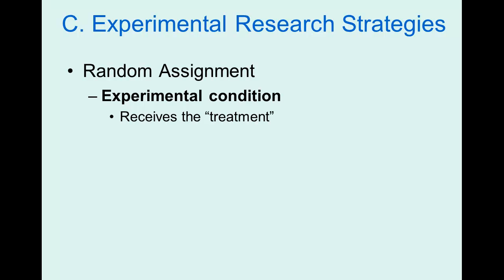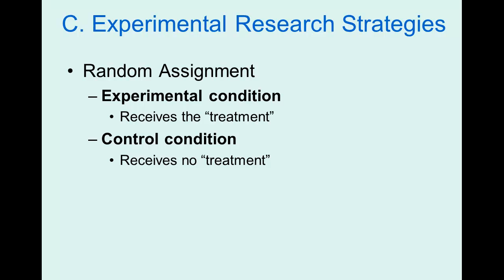Usually in a study there are two conditions: the experimental condition and the control condition. Let's say we want to know whether watching violent television causes violent behavior. The experimental condition is the group that receives the treatment — watching violent television. The control condition receives no treatment — they don't watch violent television. As a researcher, I create these groups, manipulate whether they get exposed to violent television or not, and that's how I can ultimately say something about causation.